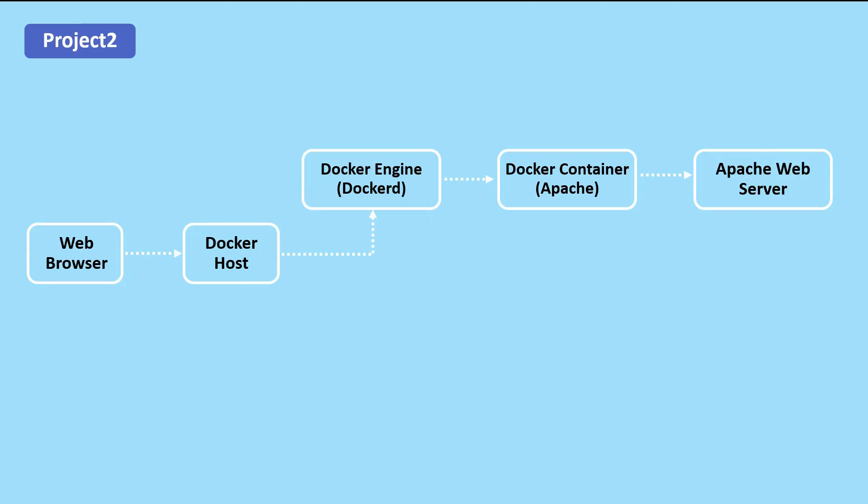This diagram represents the architecture of a dockerized Apache web server. At the top of the diagram we have a web browser which is used by the user to interact with a web server. When the user sends an HTTP request to the web server, it is received by the Docker container running the Apache web server.